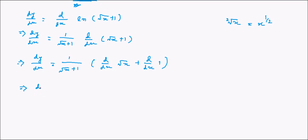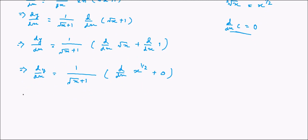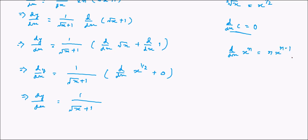So dy/dx is equal to 1 by (root x plus 1) into dy/dx of x to the power 1 by 2, plus dy/dx of 1. Since 1 is a constant, dy/dx of 1 is equal to 0. Then dy/dx equals 1 by (root x plus 1) into dy/dx of x to the power 1 by 2. Using dy/dx of x to the power n equals n into x to the power n minus 1, dy/dx of x to the power 1 by 2 is equal to 1 by 2 into x to the power 1 by 2 minus 1.